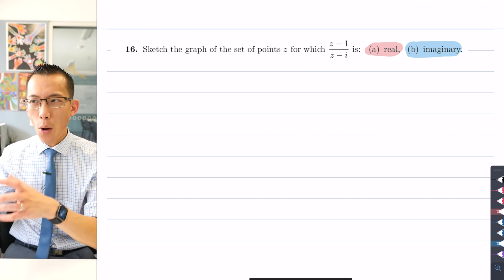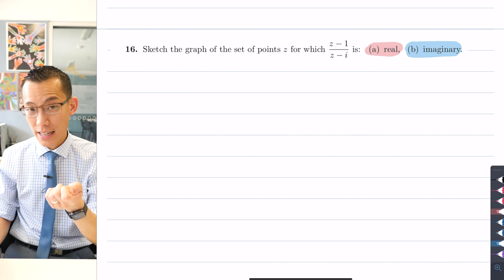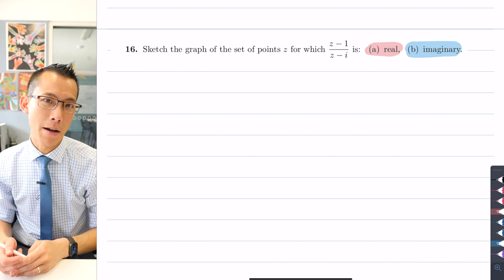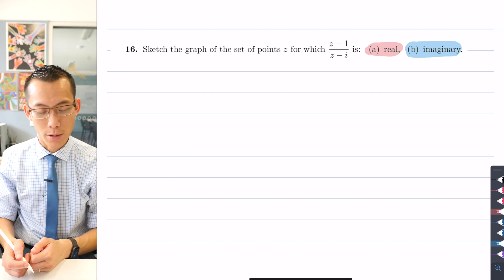If you on the other hand see complex numbers being raised to powers where you see exponentiation, that indicates to you well maybe exponential form might be the most useful or De Moivre's theorem, so you've kind of got a 50-50 there. You could use polar form as well.